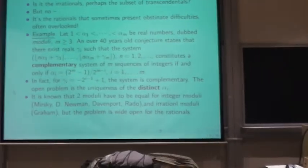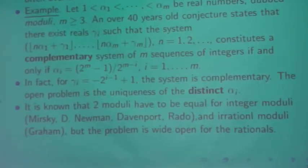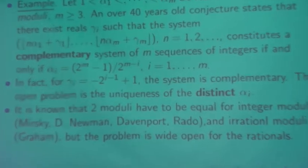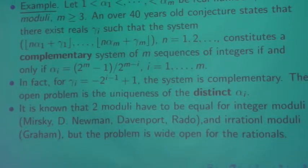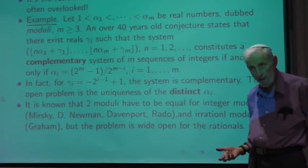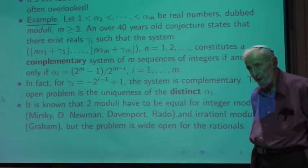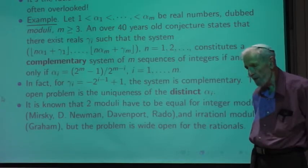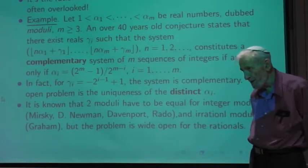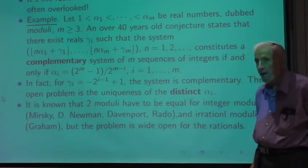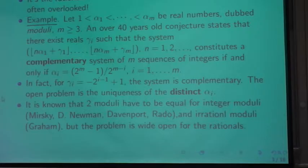For example, it is known that two moduli have to be equal for integer moduli. Integer moduli, these are essentially arithmetic sequences. So take, even and the odds, 2n and 2n minus 1. So the moduli 2 are the same. 2n and 2n minus 1. You can take, if you like, 2n and 4n minus 1 and 4n minus 3. Then you have two 4s. And so on. So there is a proof from the book that shows that these two moduli are the same.